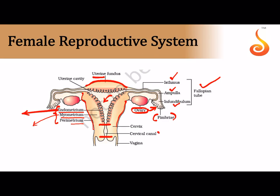The canal enclosed within the cervix is the cervical canal, which opens into the broader vaginal canal. The vaginal canal opens through the vaginal orifice. Above the vaginal orifice is the urethral orifice. Both are enclosed in folds called the labia minora, and outer to those are larger folds called the labia majora. At the upper junction of the labia minora is a small finger-like projection called the clitoris. The vaginal orifice is covered by a delicate membrane called the hymen, constituting the vulva or female external genitalia.